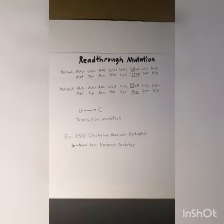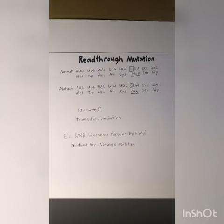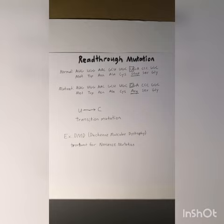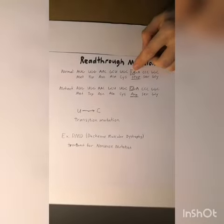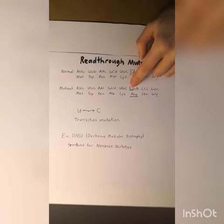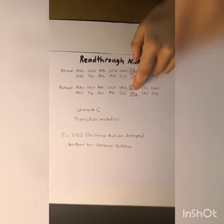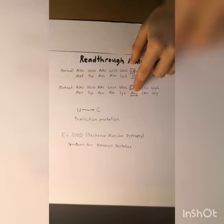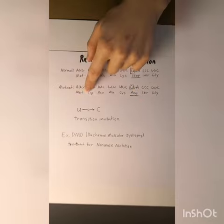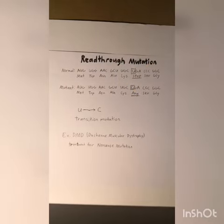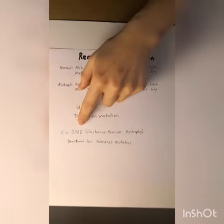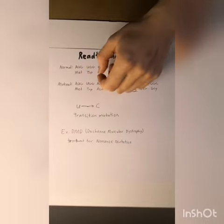This transition mutation here shows a read-through mutation. A read-through mutation turns a stop codon into a normal codon. Here, a U becomes a C, so the stop codon becomes Arg. The result is there is no stop codon, so the code keeps going on. DMD is an example of this mutation.